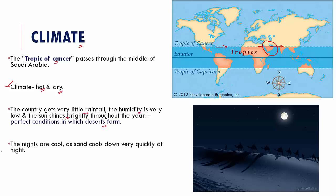In contrast, nights are cool because sand cools down very quickly. During winter nights, it can get very cold, as sand loses heat rapidly, making desert winters quite cold at night.